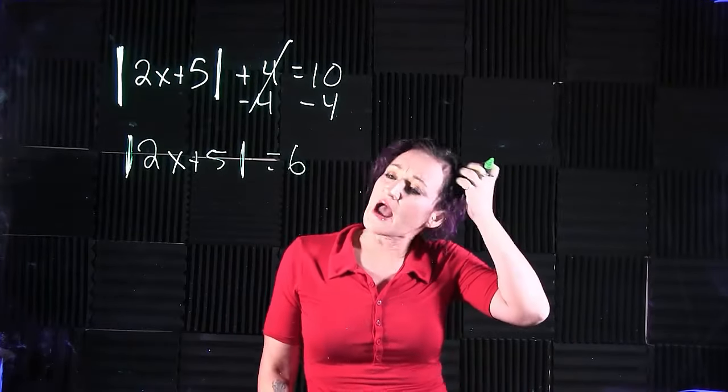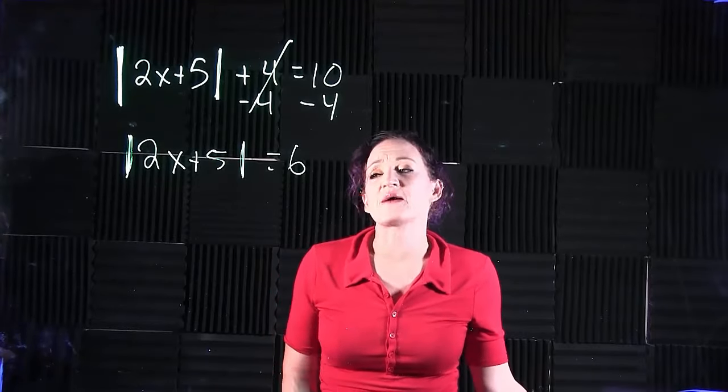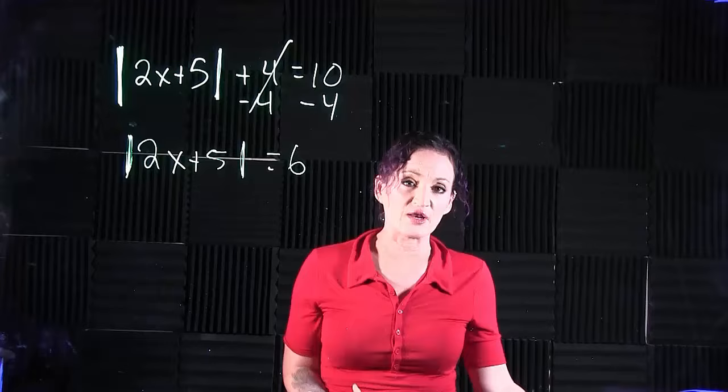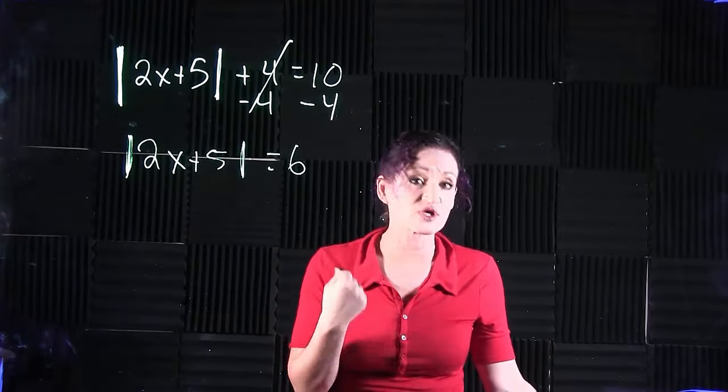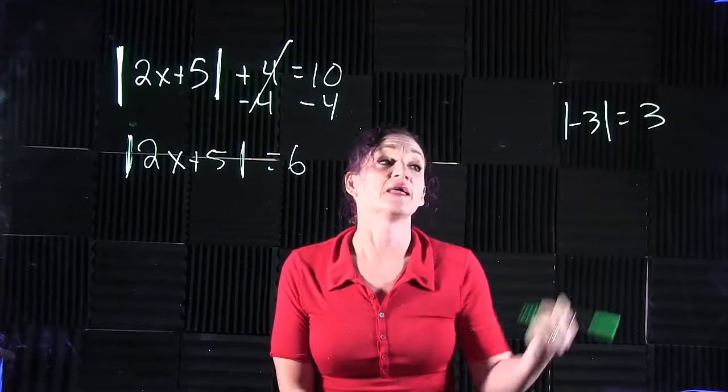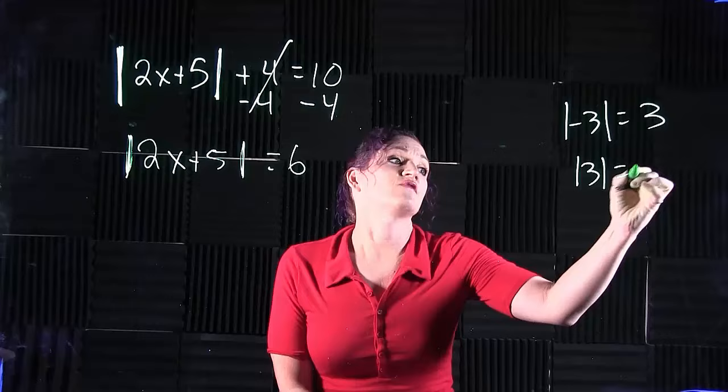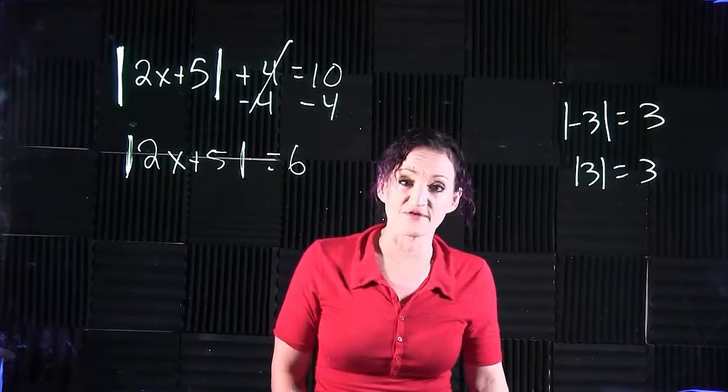When it comes to absolute value equations, keep in mind what absolute value bars do. Absolute value bars make anything inside those bars positive. So if I take the absolute value of negative three, it is a three. Absolute value of three is also a three. It just automatically reverts it to a positive value.